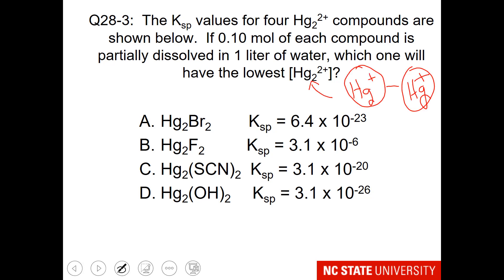Remember that oxidation state is per atom, and this material, Hg2 with a 2 plus charge, is very unusual. It is two mercury cations with a covalent bond between them. That might explain why mercury has some very strange physiological effects. So if you want the lowest mercury concentration, do you want the highest Ksp or the lowest Ksp?